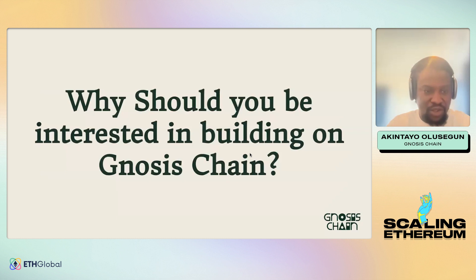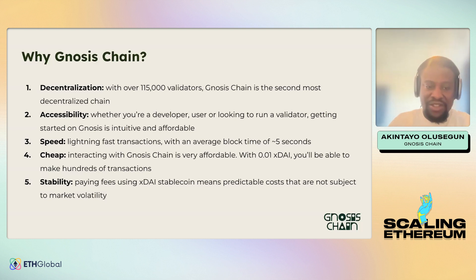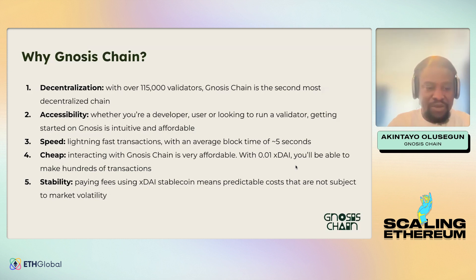Why should you want to build on Gnosis Chain? Decentralization is very key — with about 115,000 validators, Gnosis Chain is the second most decentralized chain. Accessibility is important whether you are a developer or a user. It is intuitive, affordable, and easy. Transaction time is about five seconds, enabling lightning-fast transactions. It is also cheap — with 0.01 xDai you can make hundreds of transactions.